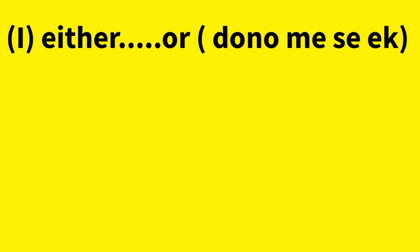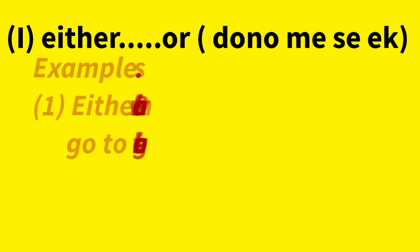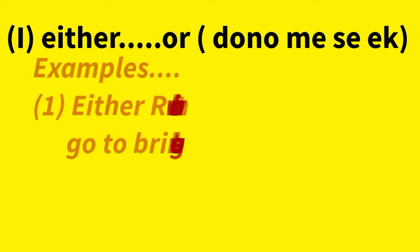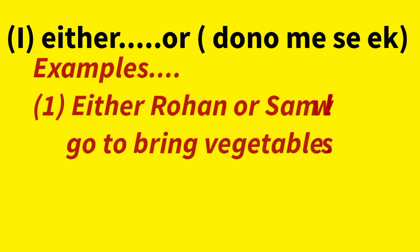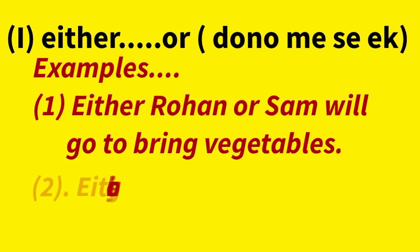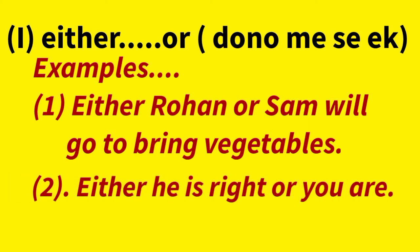The first correlative conjunction is either...or. Example: Either Rohan or Shyam will go to bring vegetables — meaning either Rohan will go or Shyam will go to bring vegetables. Second example: Either he is right or you are — ya to woh sahih hai ya to aap sahih ho.